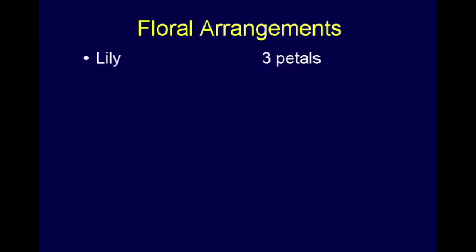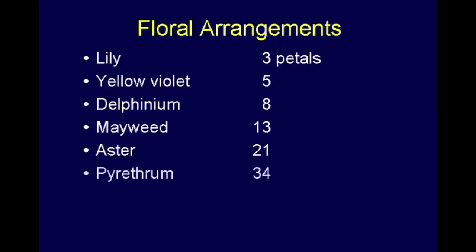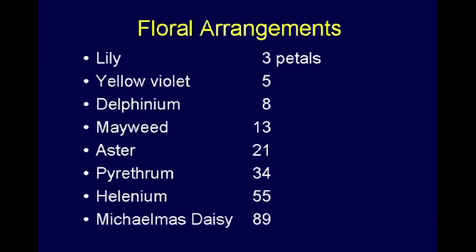In floral arrangements, the lily has three petals, the yellow-violet five, delphinium eight, the mayweed 13, the aster 21, berythium has 34, helenium has 55, and the Michaelmas daisy has 89. So if you're one of those people doing 'she loves me, she loves me not' — if you know the Fibonacci numbers, you've got a chance of winning that one. All these petal counts are in the Fibonacci sequence.